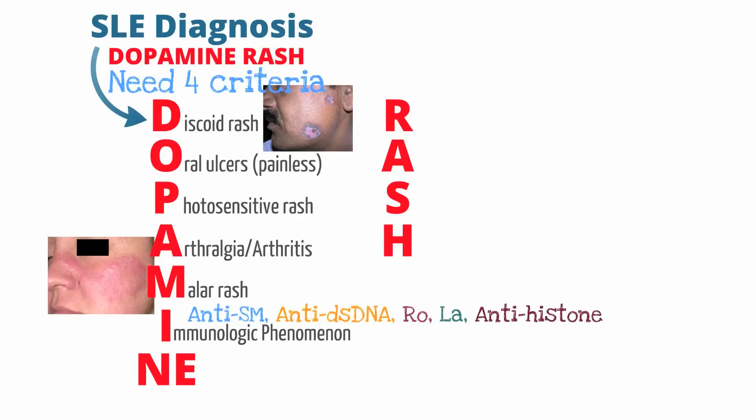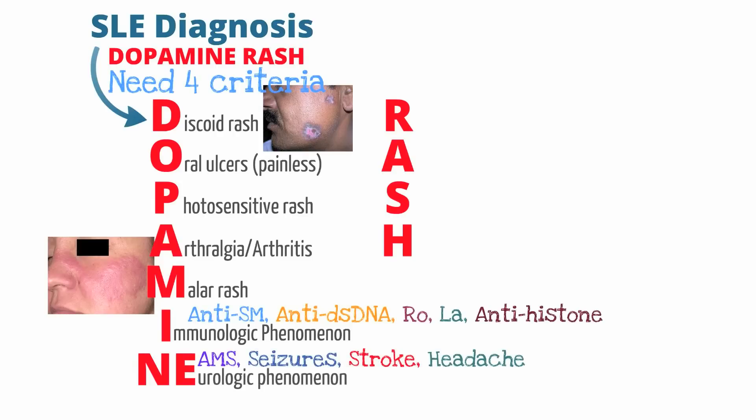If the lupus is drug-induced, you may see anti-histone antibodies. The next criteria are neurologic phenomenon. Patients can develop altered mental status, seizures, stroke, and headache.